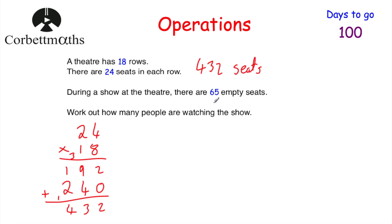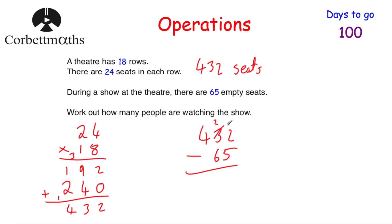Now 65 seats are empty, so we subtract 65 from 432 to find how many people are watching. 432 subtract 65: 2 take away 5 — borrow, so it's 12 take away 5 is 7. Then 2 take away 6 — borrow again, cross off the 4 making it 3, giving 12 take away 6 is 6. And 3 take away 0 is 3. So there are 367 occupied seats, meaning 367 people are watching the show.